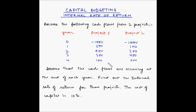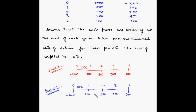Let us first represent these two projects on a time scale. These are the two time scale representations for project S and project L. Note that the cash outflows are represented with a negative sign — this negative sign indicates that this is a cash outflow from your pocket. The positive signs indicate that these are cash inflows, meaning they are coming into your pocket.